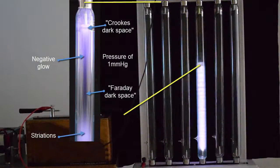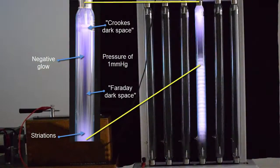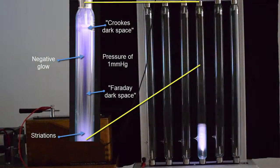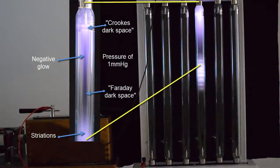As the vacuum improved, the pattern of striations changed, and a new dark space between the cathode glow and the negative glow appeared. This is now known as Crooks' dark space.